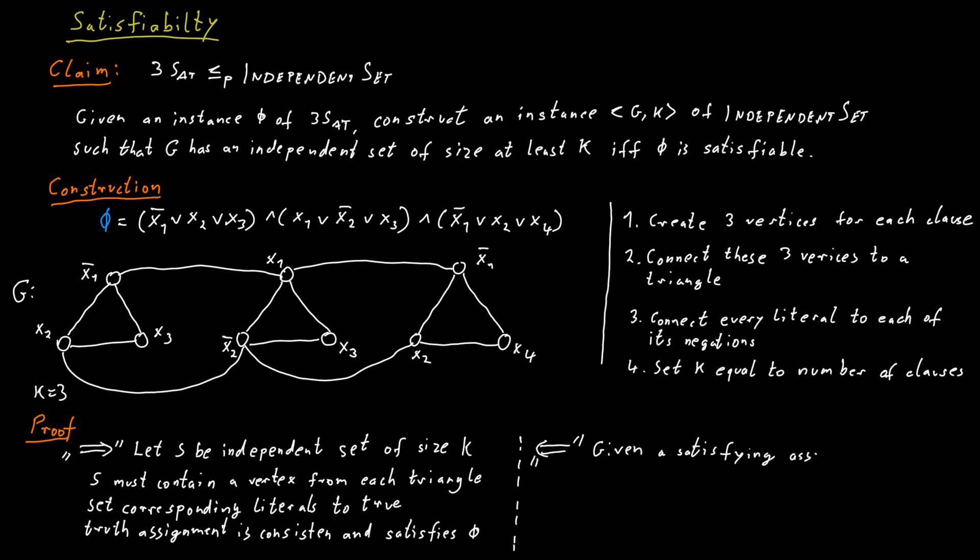For the other direction, assume that we are given a satisfying assignment for our formula. Then I can find an independent set of size at least k. In the satisfying assignment, each clause is true. So in each clause, we can find a literal that is true. We then just pick a vertex that corresponds to that literal in the corresponding triangle in the graph and include it in our independent set. That is an independent set of size k because we can pick a vertex from each triangle because we can make each of the clauses true if there is a satisfying assignment for the formula phi.